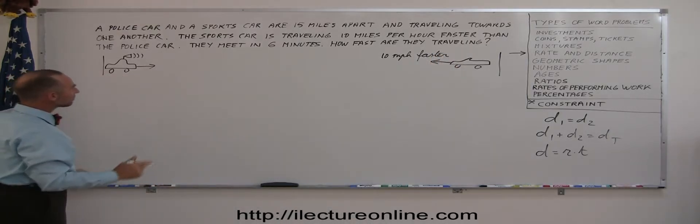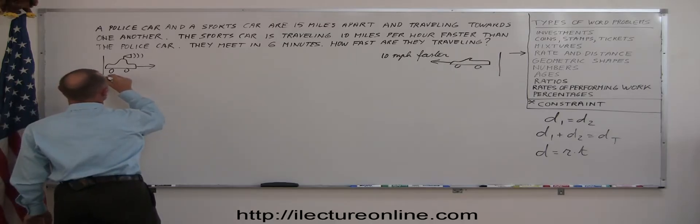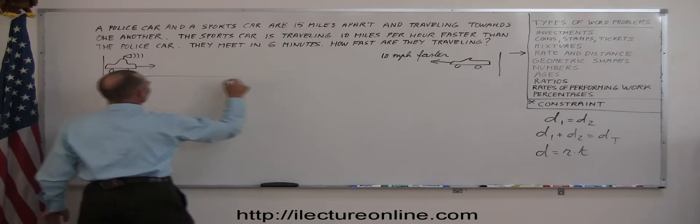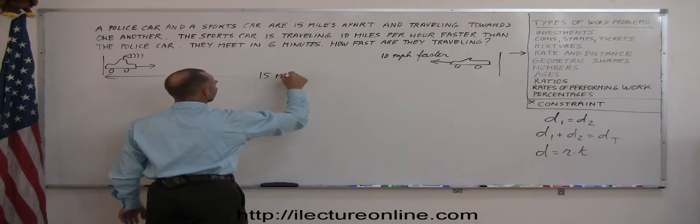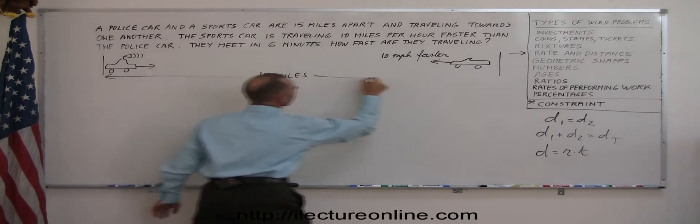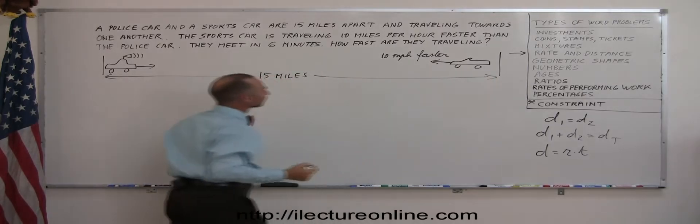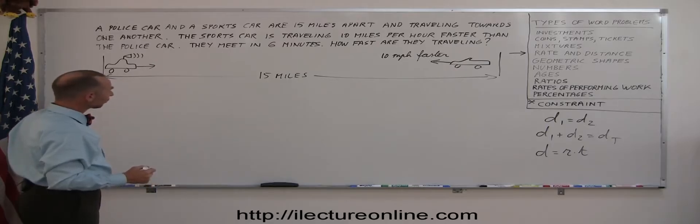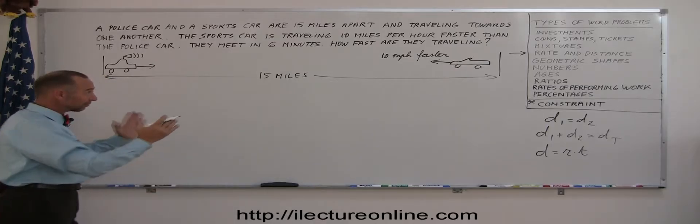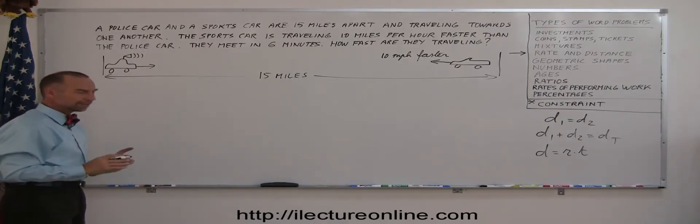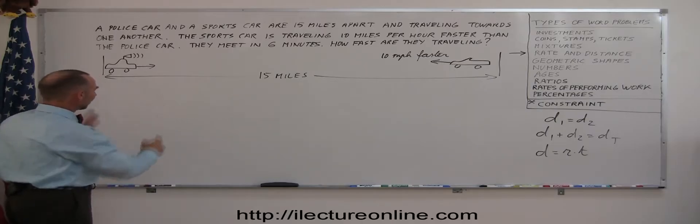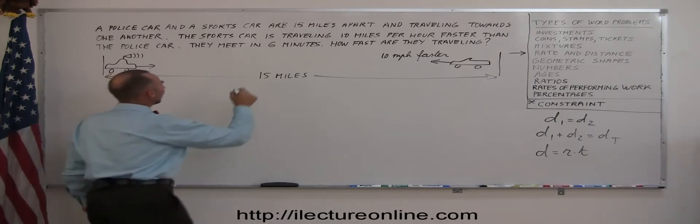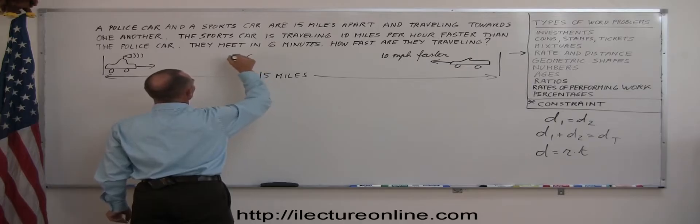Okay, they are 15 miles apart. So the whole distance between the two is 15 miles. And the total time that they both travel before they meet, and of course, they're not going to meet in the middle because the sports car is faster than the police car. So they meet at some point, and six minutes have elapsed. So time equals six minutes.